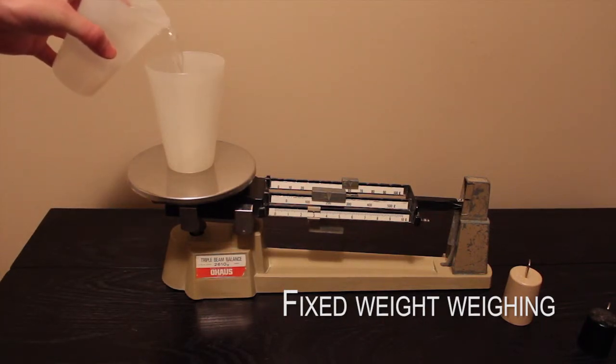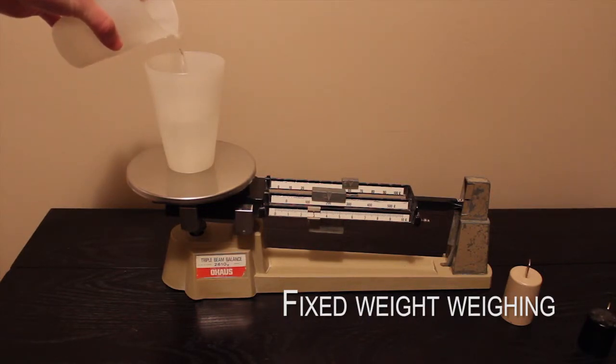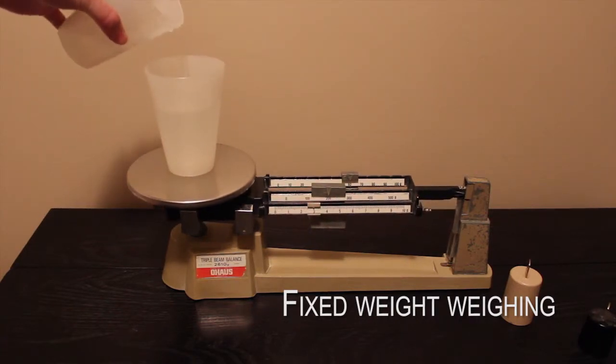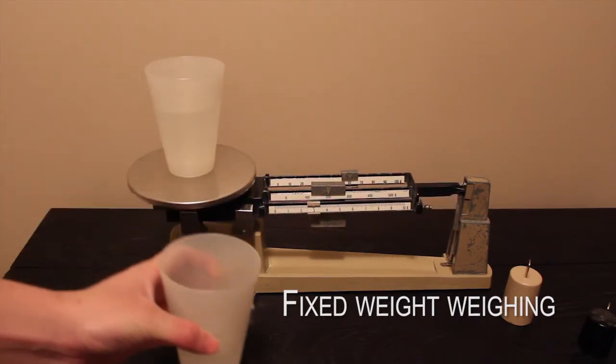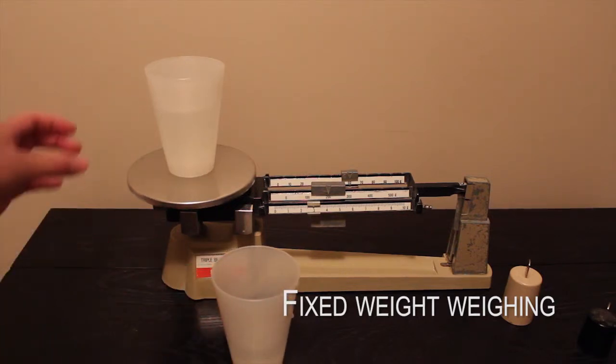This process requires accurate work in pouring in material to the container, and if too much weight is added, the balance pointer will go up beyond the middle point. Remove some material, and re-add material until the balance pointer reaches the middle.